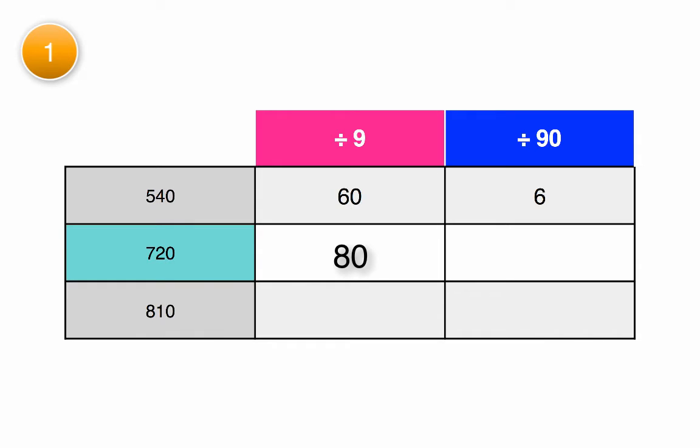Go ahead and do 720 divided by 90 on your paper. Wonderful! You have 8 as well. What do you notice about the pattern? 80 has one more 0 than 8.